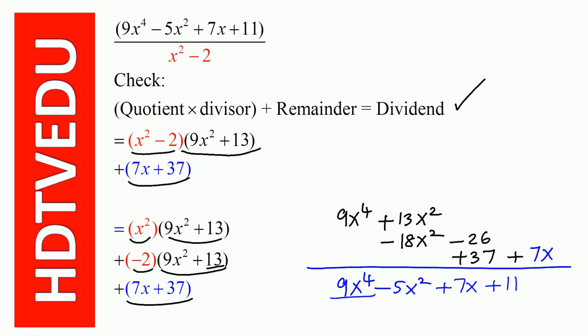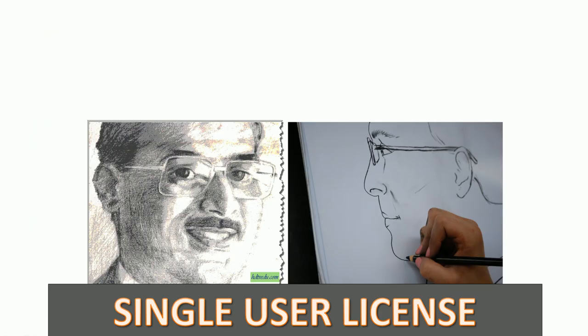So the result is 9x to the power of 4, minus 5x squared, plus 7x, plus 11 — which matches our original dividend. So we are good. This is George Matthew signing off. Good luck.